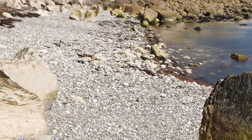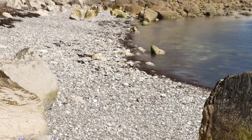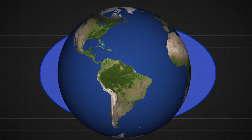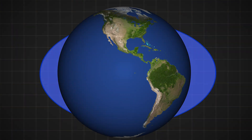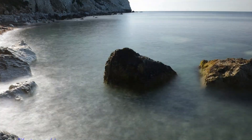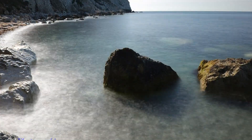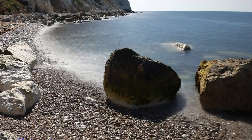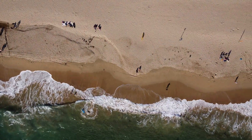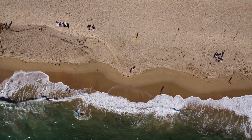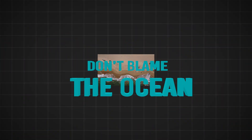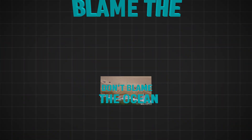So while the tide looks like it's coming in or going out, it's not. You are spinning into and out of a pre-existing bulge in earth's oceans, which gives the illusion that the tide rises and falls as you spin through this bulge. So the next time you're at the beach and the waves slowly crawl up, forcing you to move all your stuff, don't blame the ocean. Blame the moon.